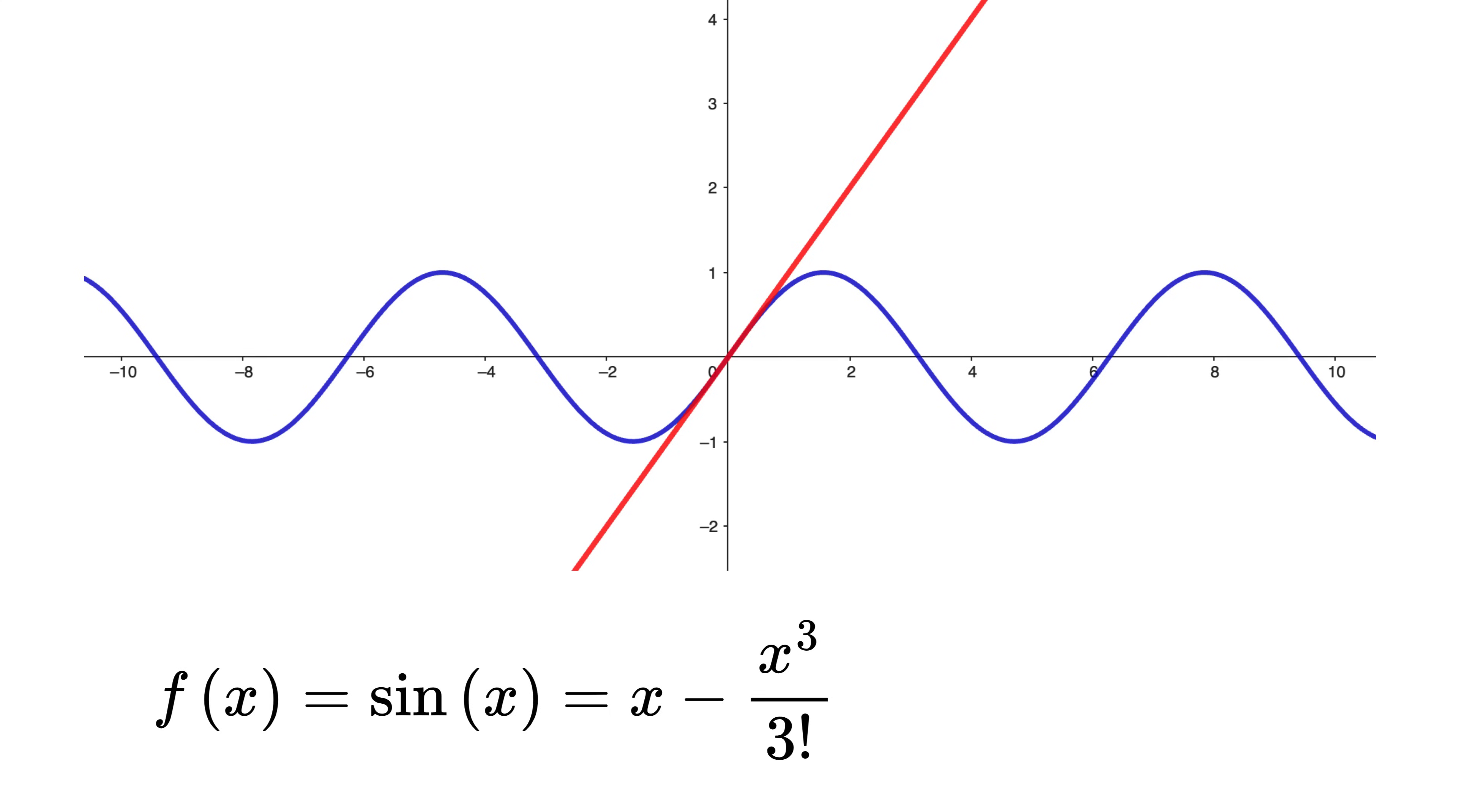Now let's subtract x³ divided by 3 factorial, or in simpler terms x³ divided by 6. Now our expression is x - x³/6. If we plot this, the curve bends a bit. It's no longer a straight line—it starts to dip as x becomes larger.